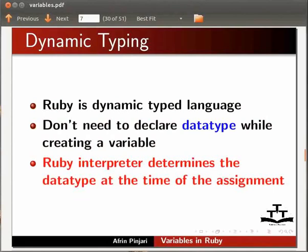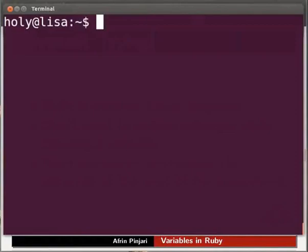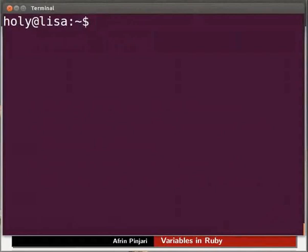Now, let us see how to declare a variable in Ruby. Open the terminal by pressing Ctrl, Alt and T keys simultaneously. A terminal window appears on your screen. Now type IRB and press Enter to launch the interactive Ruby.